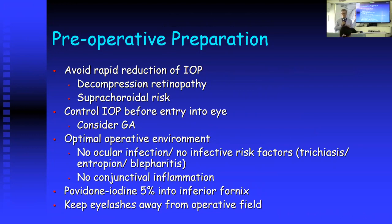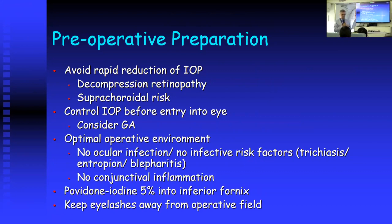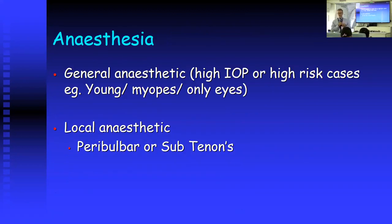Looking at preoperative considerations, the first thing we need to avoid is a rapid reduction of intraocular pressure, because there is a risk of decompression retinopathy and suprachoroidal hemorrhage. We want to control the IOP as much as possible before surgery — even if that means a general anesthetic, since all general anesthetics lower IOP. We want to provide an optimal environment with no risk of infection, addressing lid problems like trichiasis, entropion, and blepharitis, and no conjunctival inflammation. We use povidone iodine in the inferior fornix to sterilize the operative field.